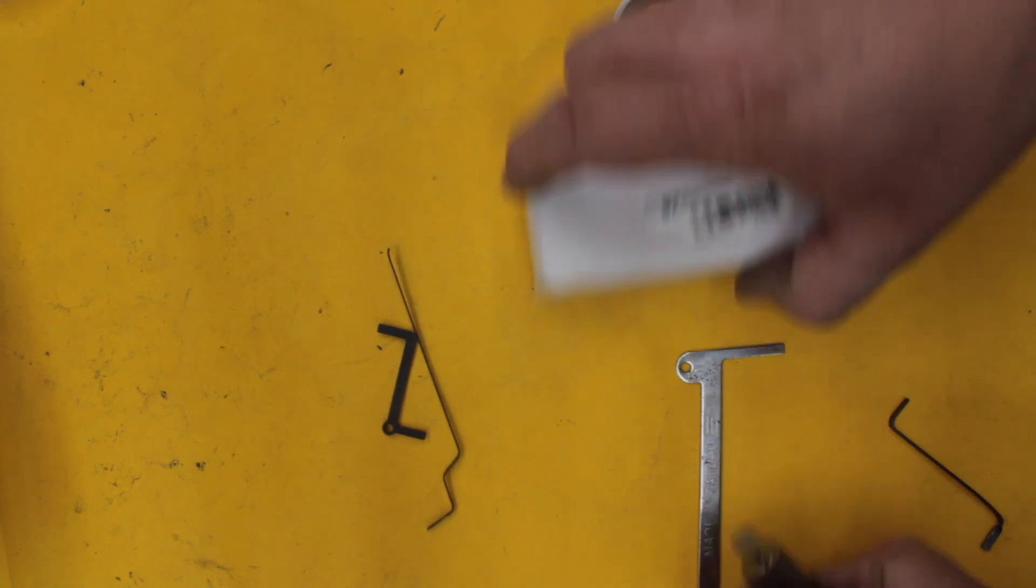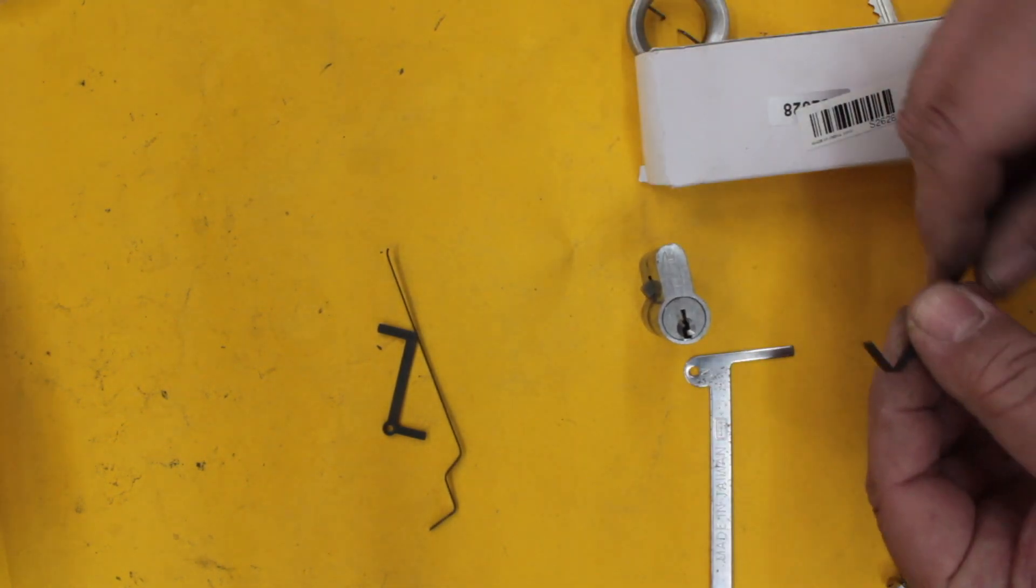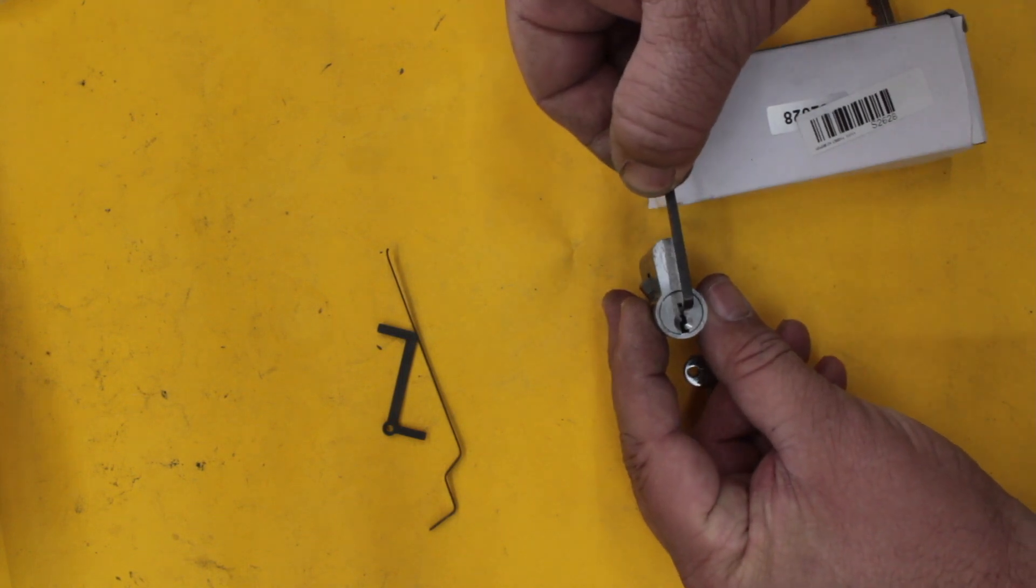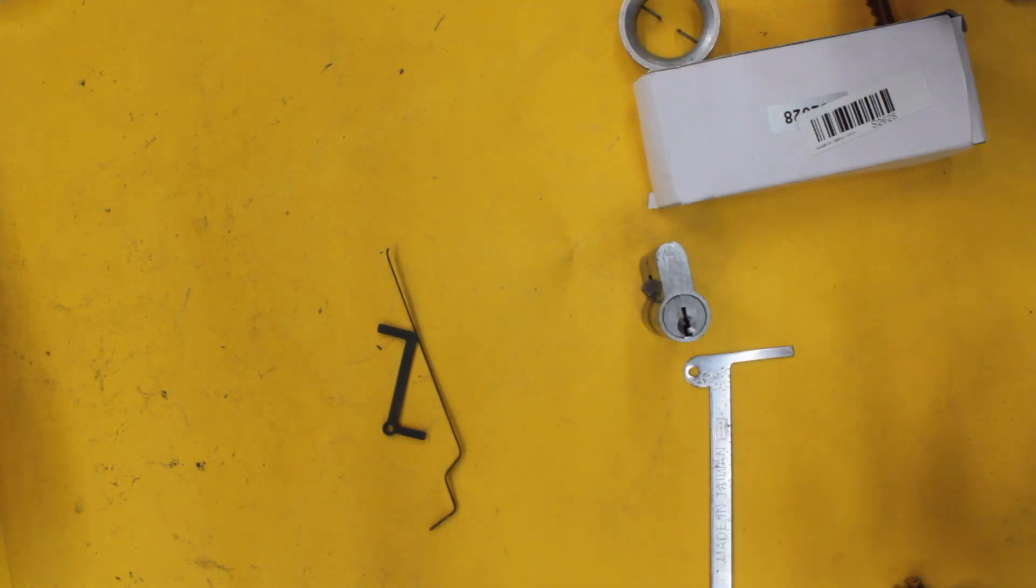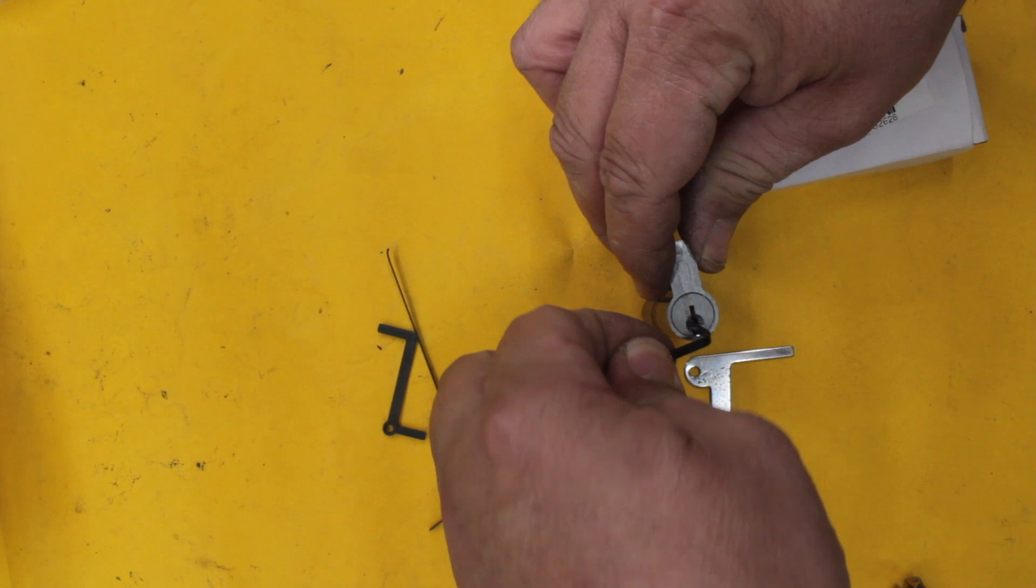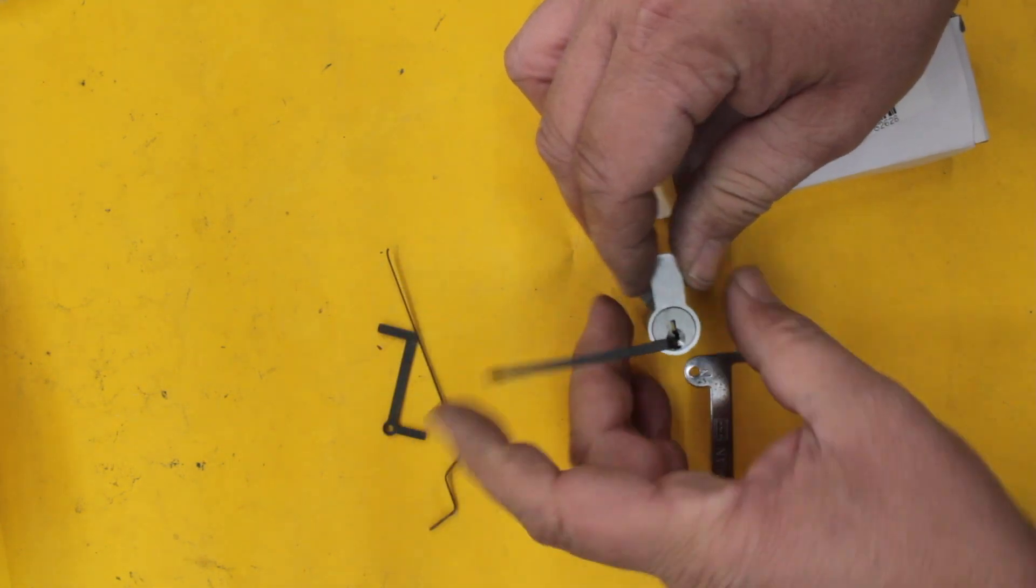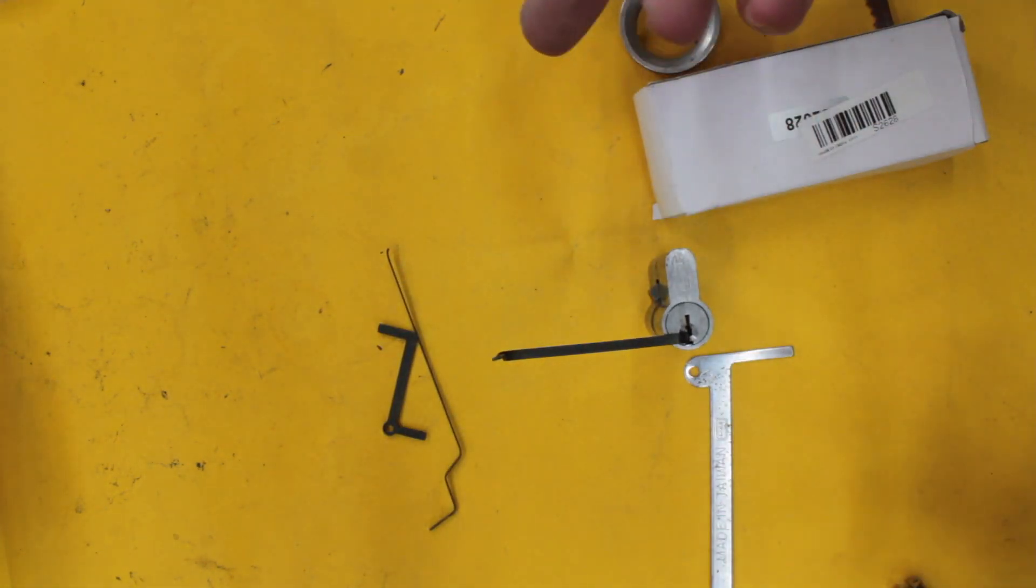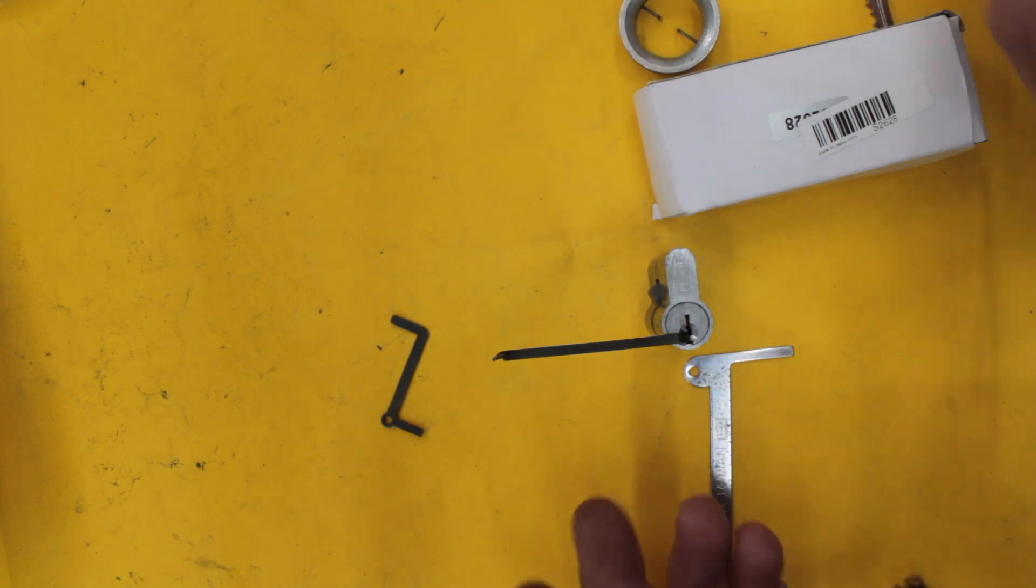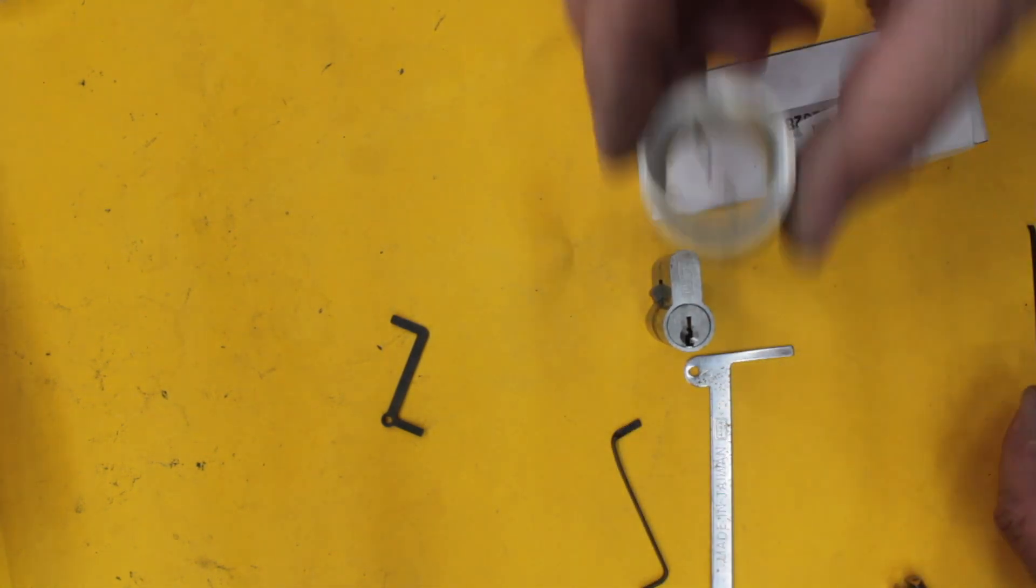There's other tension tools out there which we don't use - ones that actually go on the top of the cylinder. So on the top of the plug, they actually grab it from the top. Right here in Australia, we don't use them a lot. We kind of do the bottom here. I mean, ideally I could actually use the one that's at the top, but I'm not that familiar with it, so I just use this one.